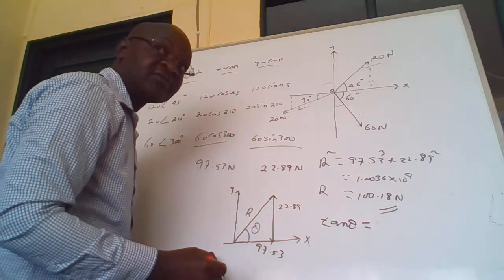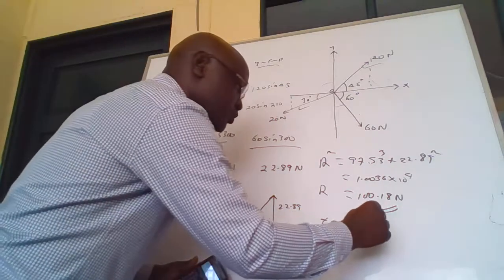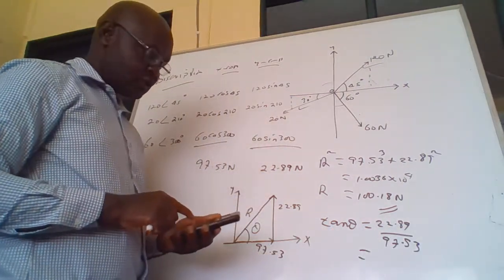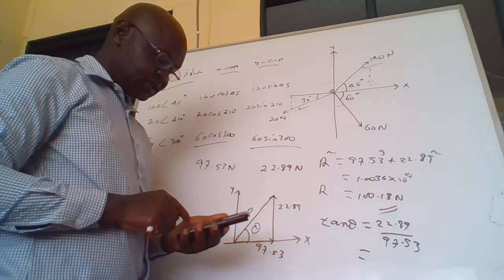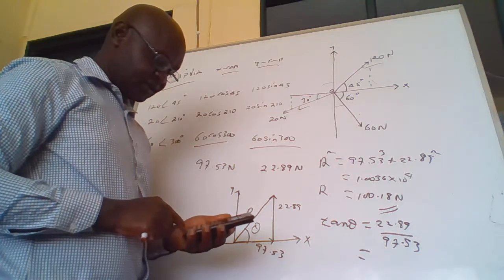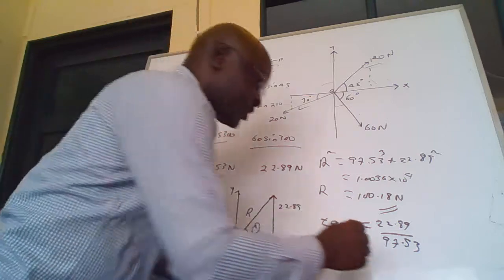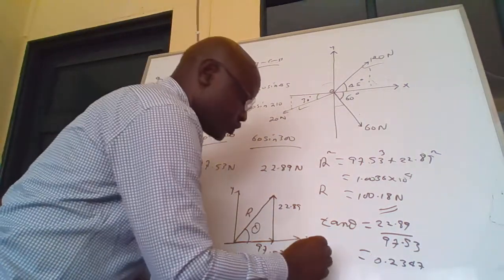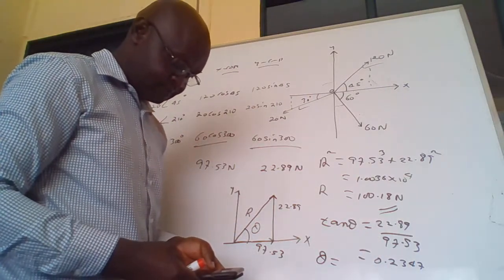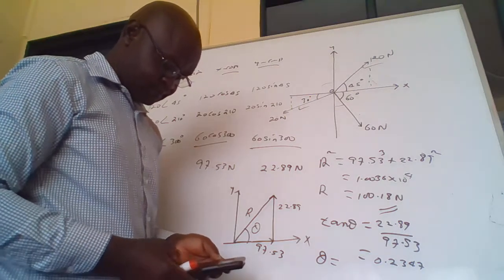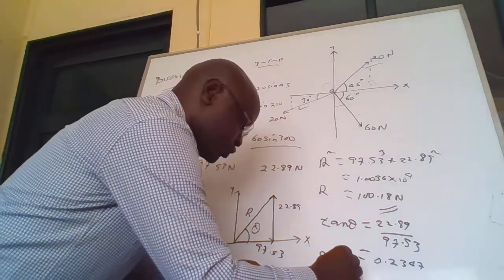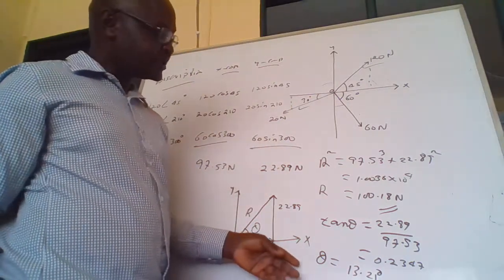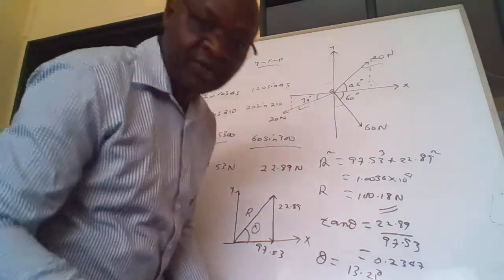For the angle, we apply the tangent: tan θ equals opposite over adjacent, which is 22.89 over 97.53, giving 0.23. Therefore θ equals 13.21 degrees. So the magnitude of the resultant is 100.18 N and the direction is 13.21 degrees. Thank you for watching and welcome.